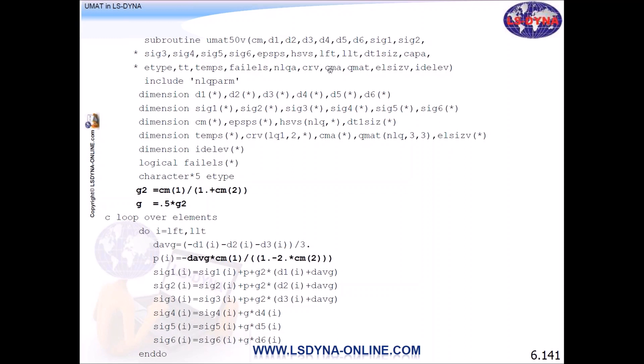Element type, total time, temperature, failure flag, CRV is the load curve you're sending, CMA is additional material. So you have 48 here, another 48 here. And QMAT is for thermal material, element size, and ID of the element.